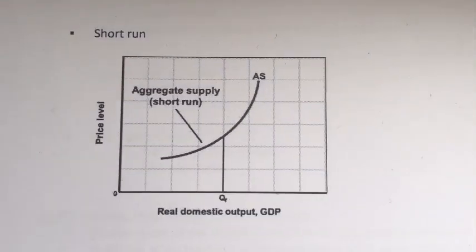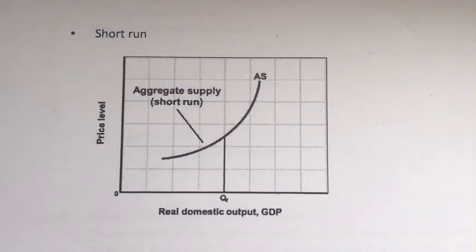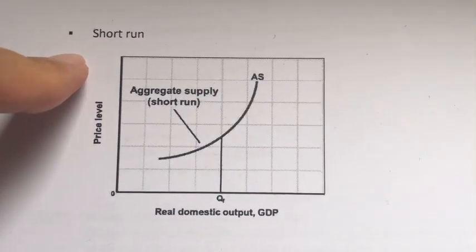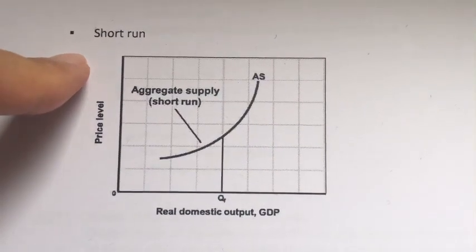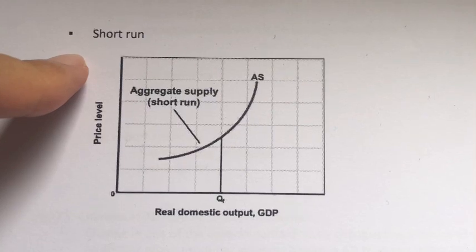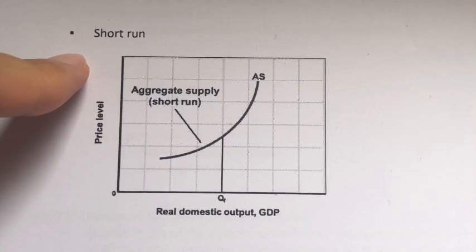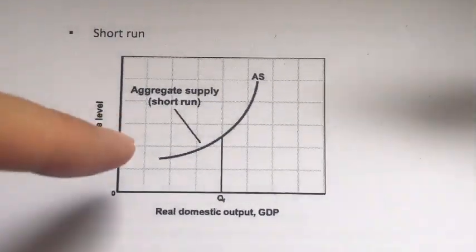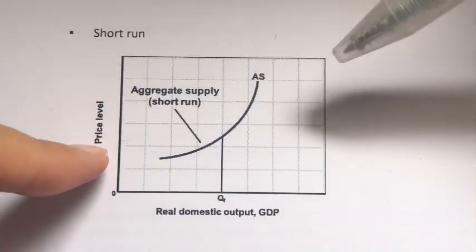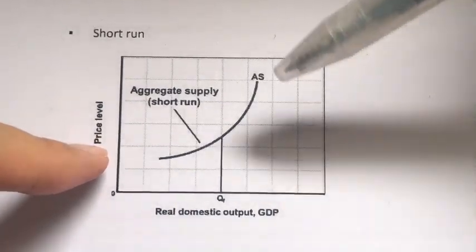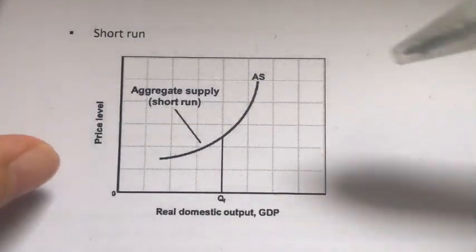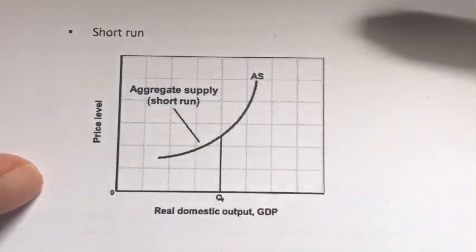Now let's move on to the second time horizon: the short run. In the short run, input prices are still fixed. However, output prices have already begun to be more flexible. So the shape of the aggregate supply curve in the short run is no longer a straight line — in fact, it's upward sloping.